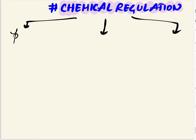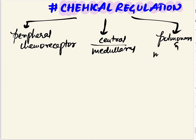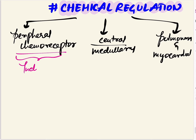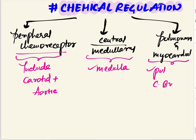The three groups are: peripheral chemoreceptors, central or medullary chemoreceptors, and pulmonary and myocardial chemoreceptors. Peripheral chemoreceptors include the carotid bodies and aortic bodies. Central medullary chemoreceptors are a chemo-sensitive area present in the medulla itself.